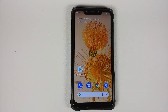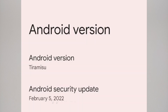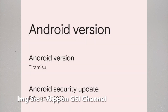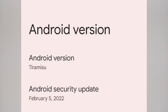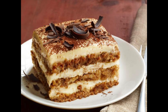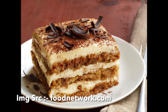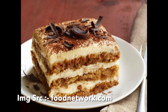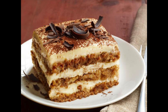The first change you will notice is if you go into About > Android Version — Google is calling Android 13 'Tiramisu.' For those of you who do not know, Tiramisu is a dessert, and it tastes pretty good.